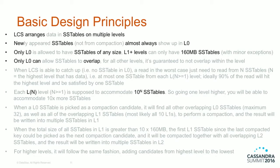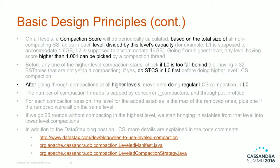For any higher level — L1, L2, L3 — those levels can only have 160 MB SSTables, which is determined by a parameter but defaults to 160. L0 is the only level that can have overlap; any higher level L1, L2 cannot have overlap, otherwise you'll have serious problems. For each level LN, they're supposed to accommodate up to 10^N SSTables. The compaction score is calculated based on the total size of non-overlapping, non-compacting SSTables in each level divided by that level's capacity.